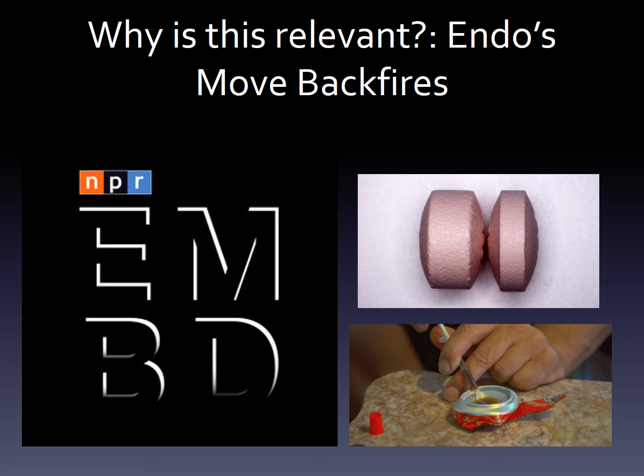A recent episode of an NPR podcast called Embedded described how addicts were able to get around the protective coating of the drug so that they could inject it. In this clip from the podcast, the interviewer is in a house in Indiana where two addicts, Jeff and Joy, are describing their experiences with Opana and how they got addicted. Here, they show the interviewer how they cooked the drug.